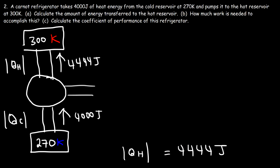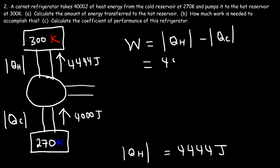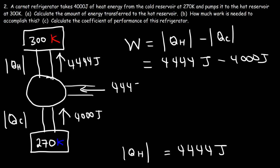Part B: how much work is needed to accomplish this? The mechanical work is the difference between QH and QC. So it's 4,444 joules minus 4,000 joules, giving W equal to 444 joules.